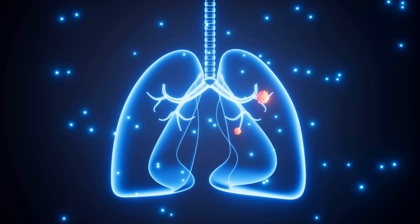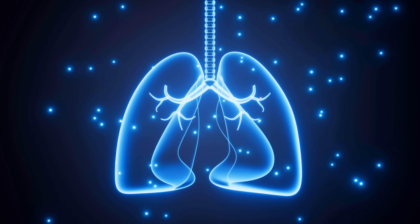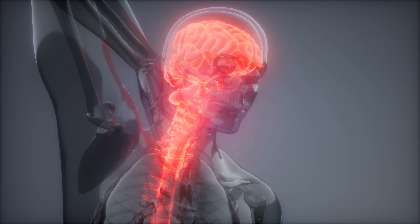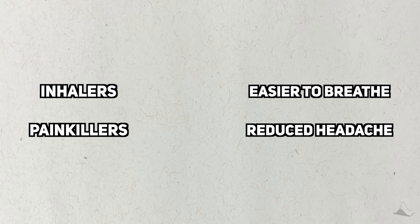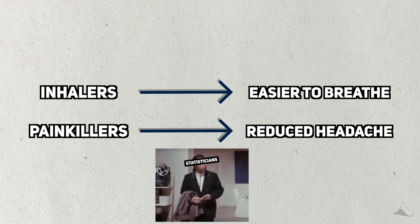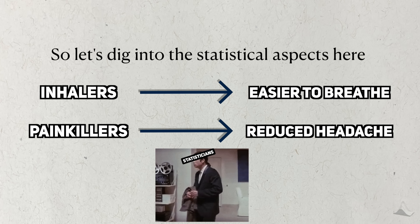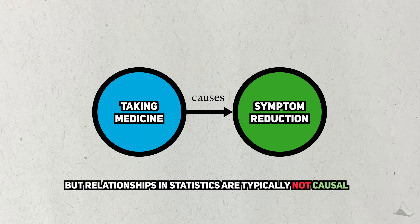When I take my inhaler, I know that it's going to make it easier for me to breathe. When you take an aspirin for a headache, you have a pretty good idea that it's going to work. At first glance, there doesn't seem to be anything statistical about this. In both of these cases, we're counting on the fact that these medicines have a proven, causal relationship with our symptoms — they make them go away.